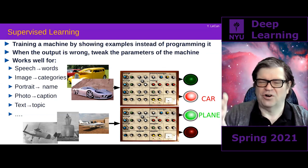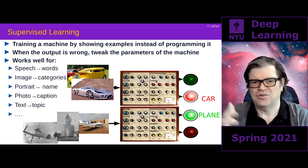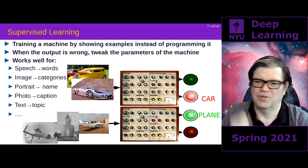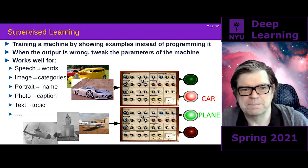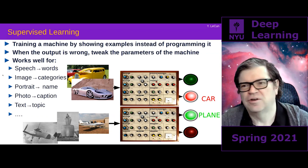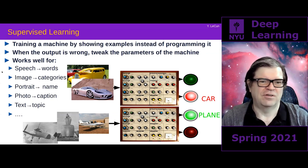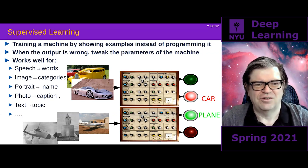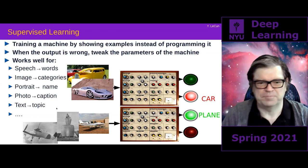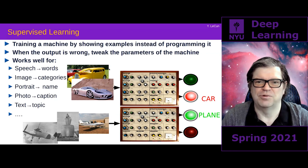Imagine the target output is some vector of activities on a set of outputs. You want the vector coming out of the machine to get closer to the vector that is the desired output. This works really well as long as you have lots of data. It works for speech recognition, image recognition, face recognition, generating captions, translation, all kinds of stuff. This is about 95% of all applications of machine learning today.